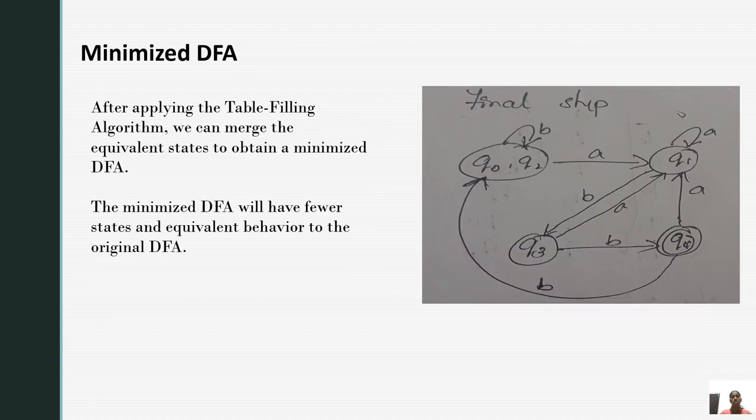Next, this is the minimized DFA. This is the final step when we use the minimized DFA. After applying the table filling algorithm, we can merge the equivalent states to obtain a minimized DFA. By merging the equivalent states, we get the final step of this DFA that is called the minimized DFA. The minimized DFA will have fewer states and equivalent behavior to the original DFA.